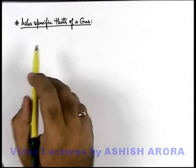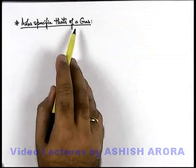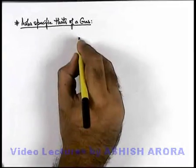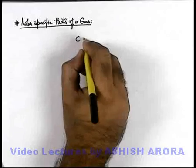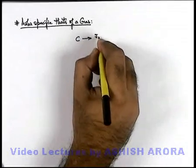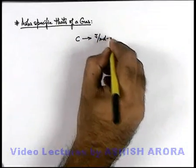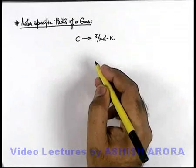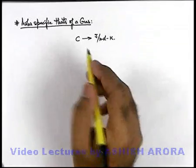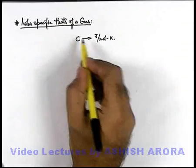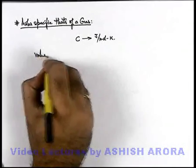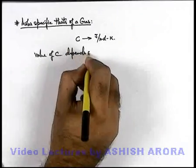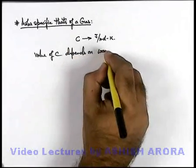Now we'll discuss in detail about molar specific heats of a gas. As we already studied, molar specific heat is denoted by C, which is measured in units of joule per mole kelvin. We also studied that even for a single gas, molar specific heat can be given in many ways. The value of C depends on the way of heating the gas.